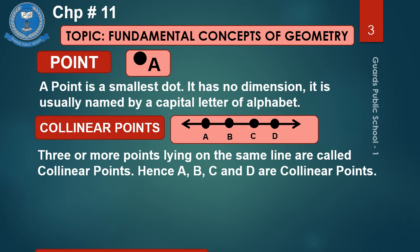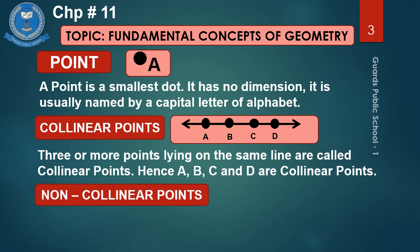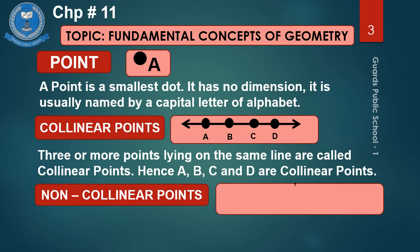Number 3 is non-collinear points. It's very easy: if three or more points do not lie on the same line, they are called non-collinear points.